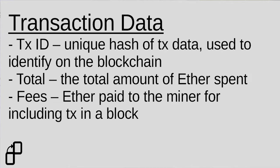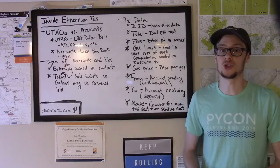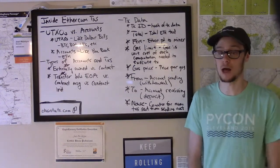Next you have a total, which is the total amount of Ether transacted when the transaction is processed in a block — that includes the actual funds the receiver will get as well as the fees. The fees are the Ether paid to the miner that finds the block solution and processes that new block on the blockchain.